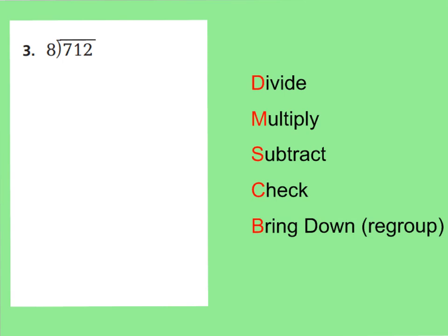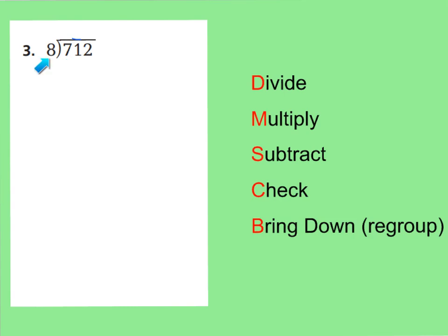Remember, we're going to first of all look in our hundreds place. Do you see that I have 7 groups of 100, but I have 8 groups to divide? There's no way I can put these 7 mats of 100 into 8 different piles — they won't work. So we're going to have to break it up and regroup it into 71 tens. Therefore my quotient needs to start right above my tens place. So now we're going to look at the 71 tens and divide those into 8 groups.